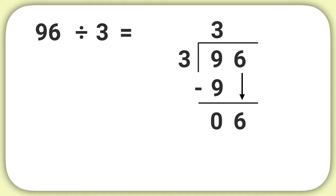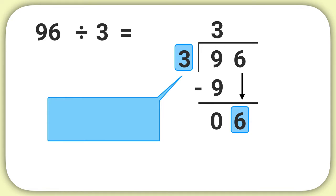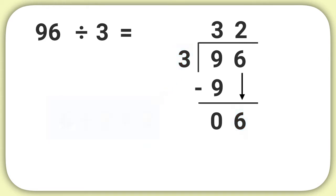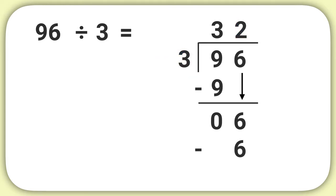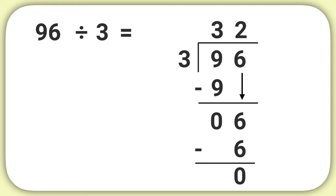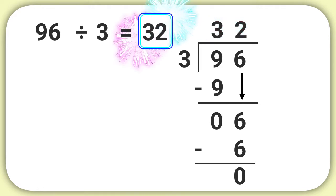Let's start by dividing 6 by 3. What does that equal? Well, 6 divided by 3 equals 2. Let's write that into our problem. Next we need to multiply: 2 times 3 equals 6. And we'll write minus 6 into our problem. Then we solve 6 minus 6 to get 0, and we've finished our work. We can see our answer above the line: 96 divided by 3 equals 32.